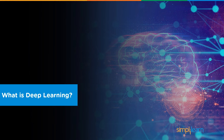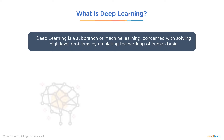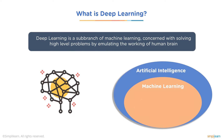The first question that arises is: what is deep learning? Deep learning is generally considered to be a subset of machine learning, which is itself a subset of artificial intelligence. Artificial intelligence is the intelligence demonstrated by machines, unlike the natural intelligence displayed by humans and animals. Machine learning is an application of AI that provides systems the ability to automatically learn and improve from experience.